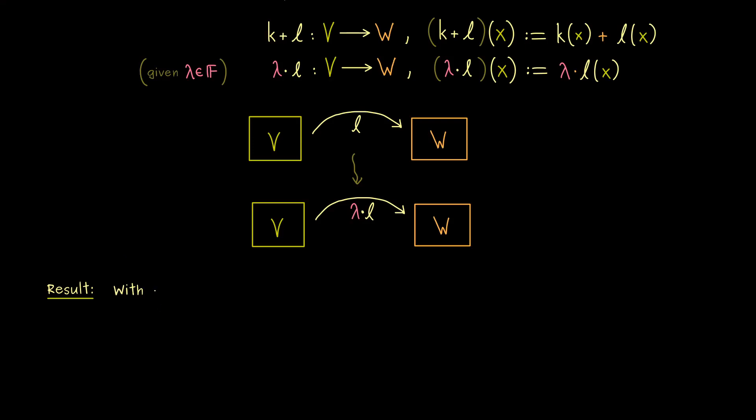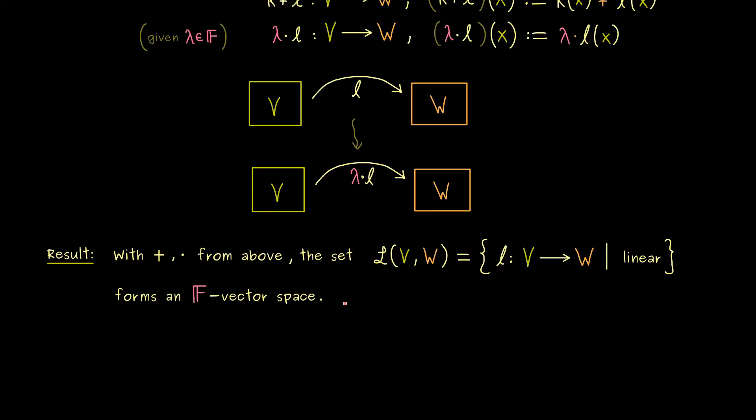Therefore, now our result here is, with the two operations addition and scalar multiplication, the set we can call L(V,W), defined by the linear maps from V to W, is a vector space again. More precisely, it's an F vector space again. In other words, we can calculate with linear maps as we can do it with abstract vectors.